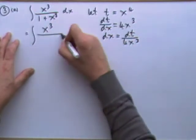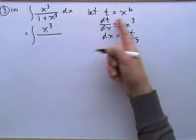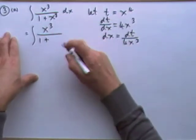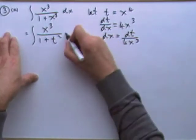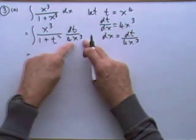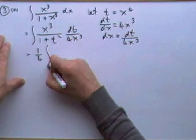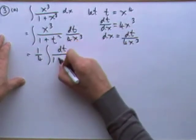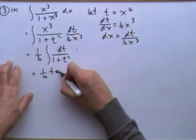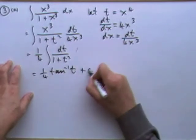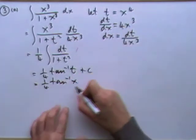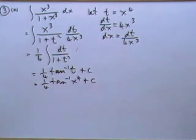If t is x to the 4, dt by dx would be 4 times x cubed. So in order to change these differentials, dx would be dt over 4x cubed. So that's going to be x cubed over 1 plus x to the 4 squared, which is t squared. Instead of dx, I'm going to make it dt over 4x cubed. The x cubed's cancel. The 4 can come out. So I've got a quarter of dt over 1 plus t squared, which is a quarter of inverse tan of t plus some number.